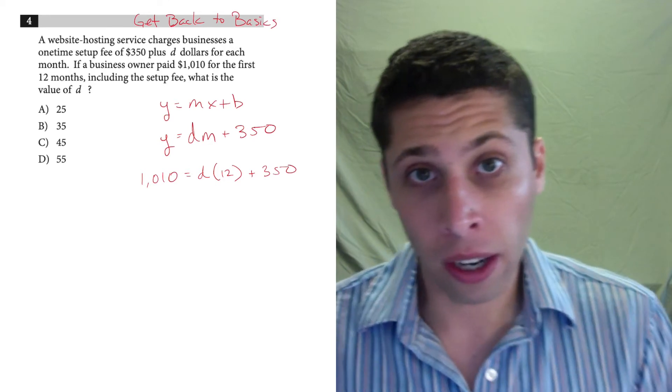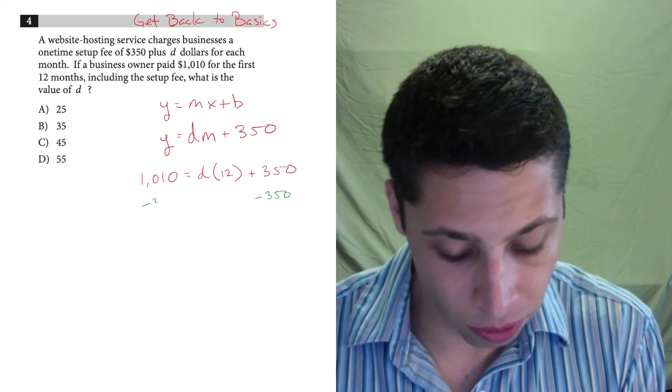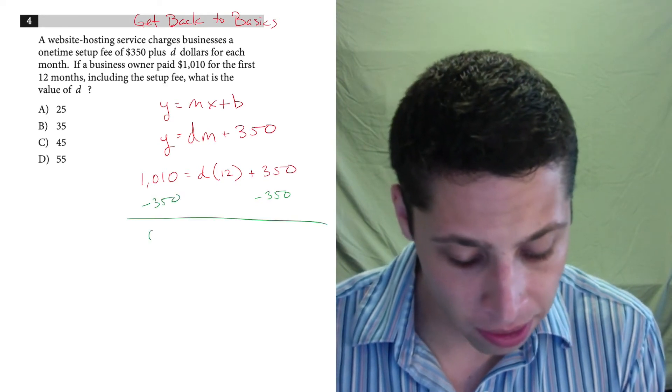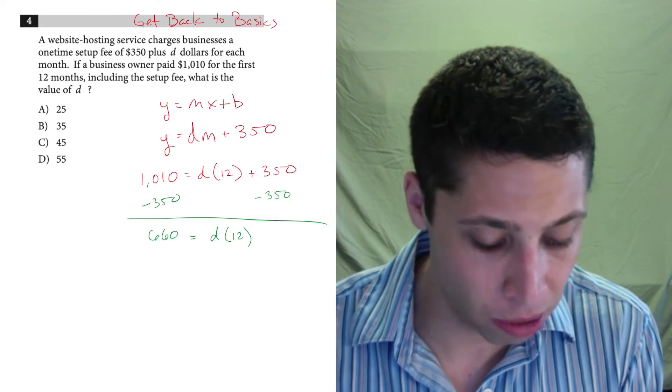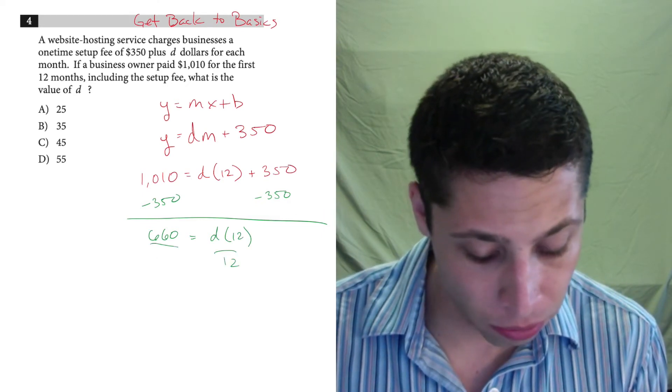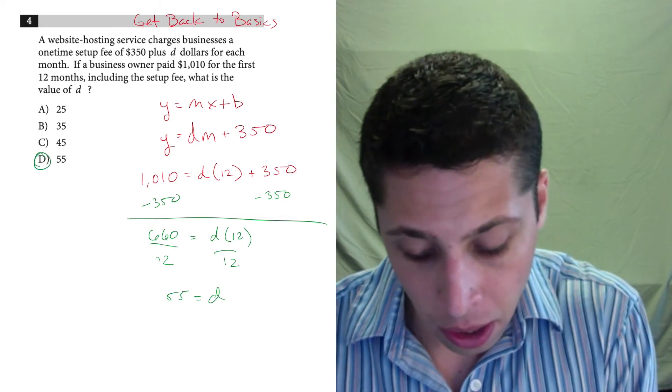So now it's just a matter of solving for D. You just do normal algebra here. Subtract 350 from both sides and you get 660 equals D times 12, divide by 12, and you're going to get that D is equal to 55, choice D.